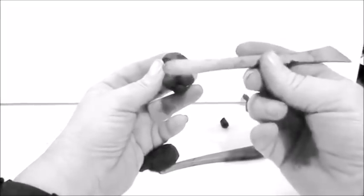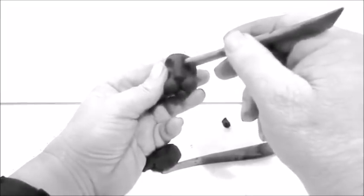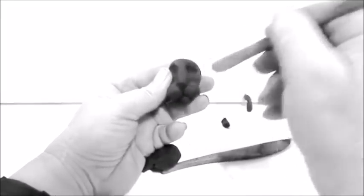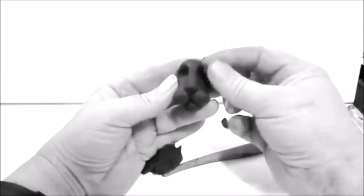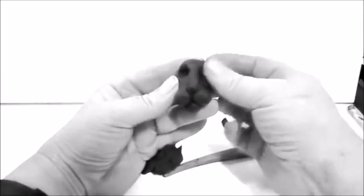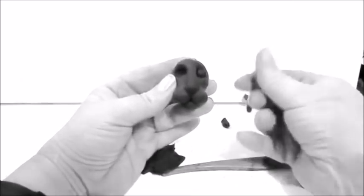Now I'm going to take one of my tools and I'm going to make an indentation to create the eye socket for the eyes. And then I'm going to take a little ball of clay like this and put it in there for the eyeball. I'm going to repeat that for the other eye.